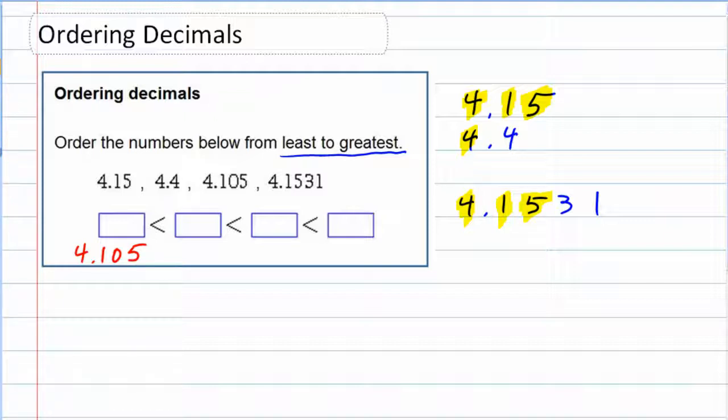When I look at the next place value, there's nothing on that top number. So I can always put in a zero if I want something to compare, and comparing that to the three means it has the smallest digit in that place value. So it's the next smallest, or the second smallest. I'll put that in - that was the 4.15. Remember, I just put that zero on there to give us a digit to compare. So now it is out of the mix.